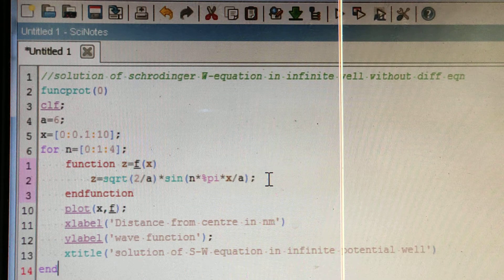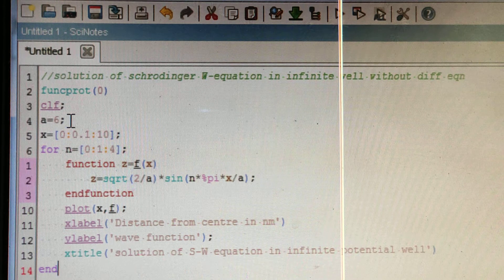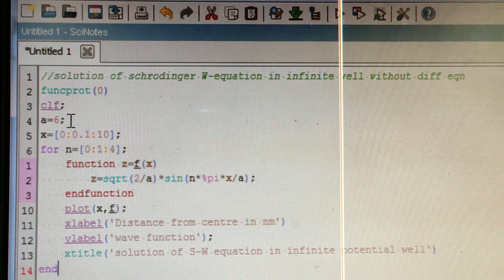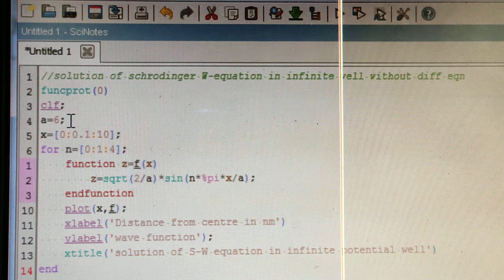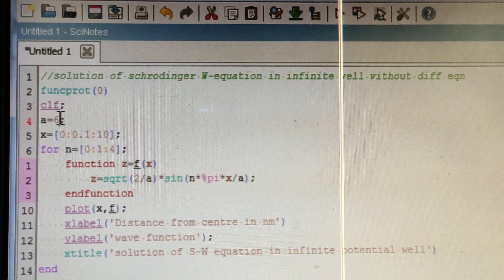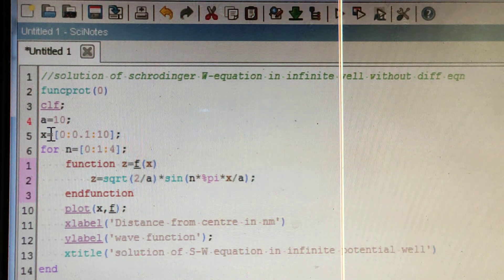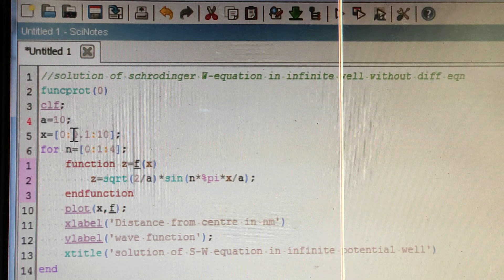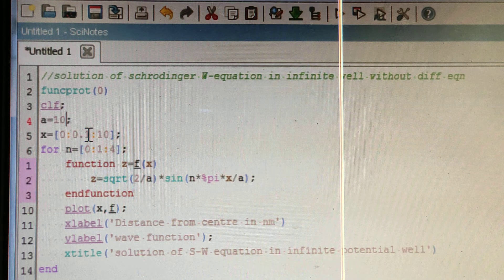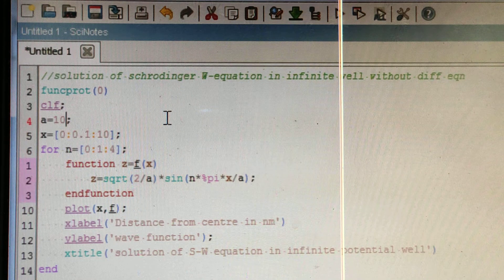I am taking a equals 10, for example. So x is equal to 0 to 10 with step length 0.1.